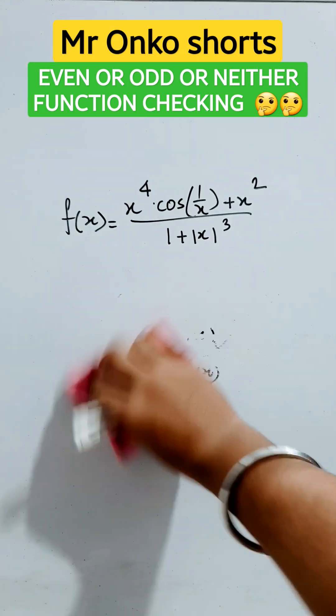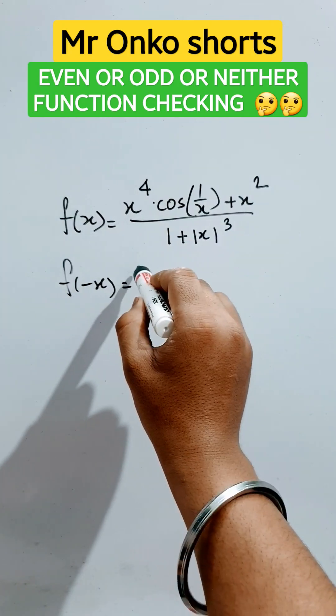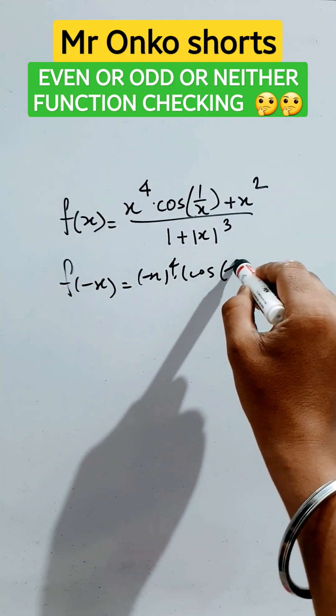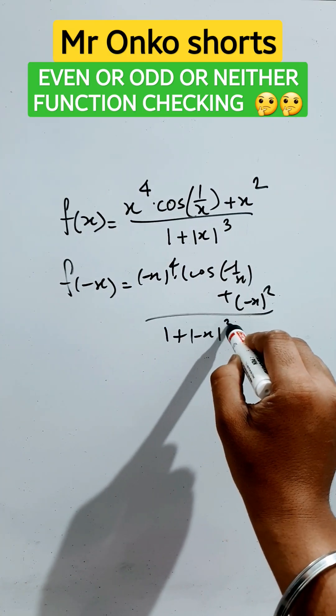So now in this function, we will put f of minus x, so x will be replaced by minus x. So it will be (-x) to the power 4, cos of 1 over (-x), plus (-x) squared, over 1 plus mod of (-x) cubed.